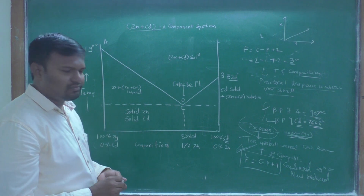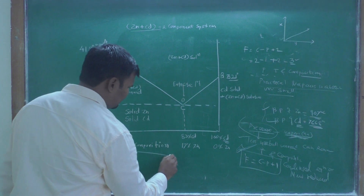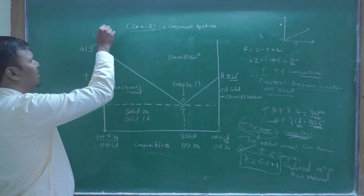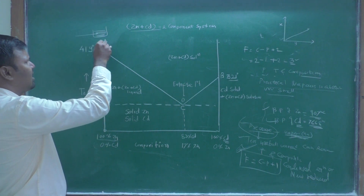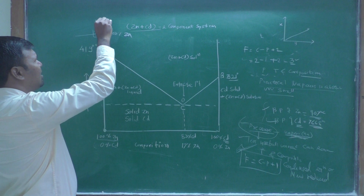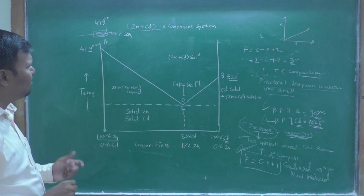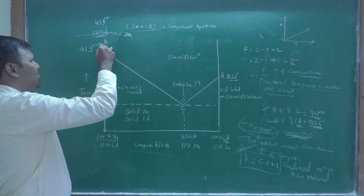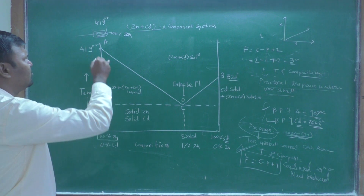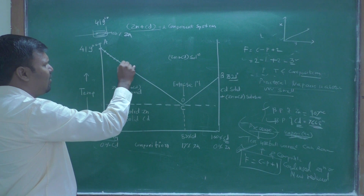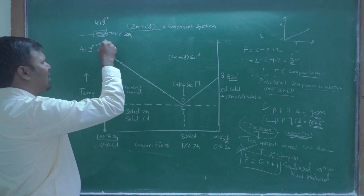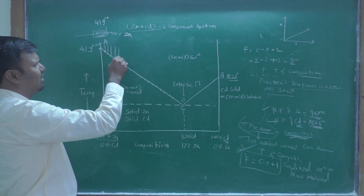In this phase diagram, one axis is temperature and the other is composition. At point A, there is 100% zinc, and at that temperature of 490°C the zinc is in molten (liquid) form. As we start adding cadmium to the zinc, the melting point changes.